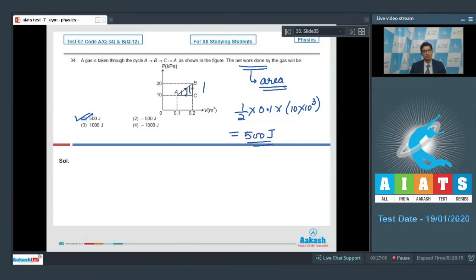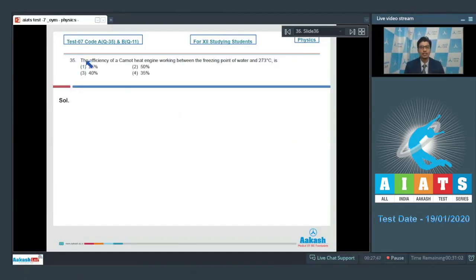Now let us discuss question number 35. Question 35 says the efficiency of a Carnot heat engine working between freezing point of water and 273 degree Celsius is.